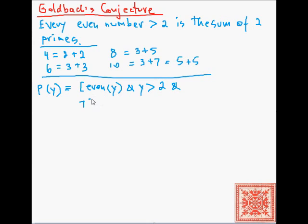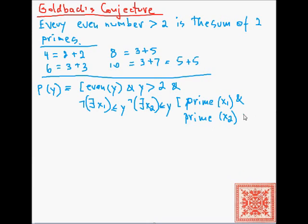Let's define two bounded existential quantifiers. There is no such x less than or equal to y, and there is no x2 less than or equal to y, such that both of them are primes.